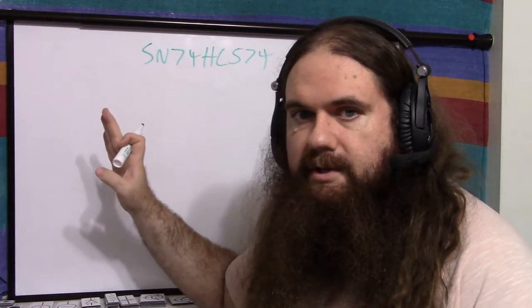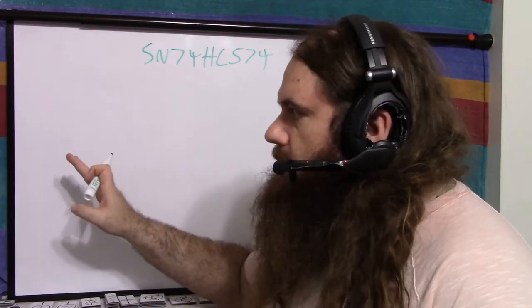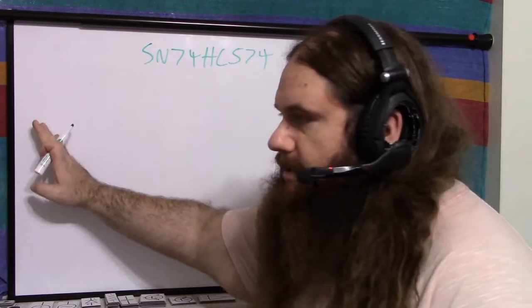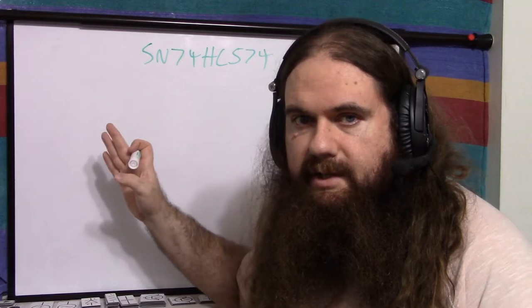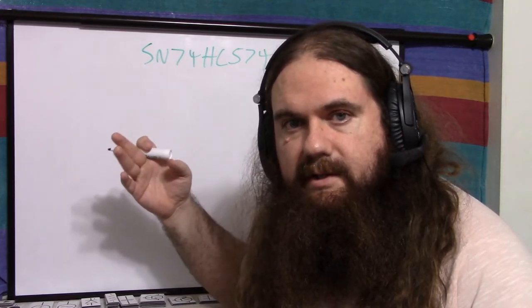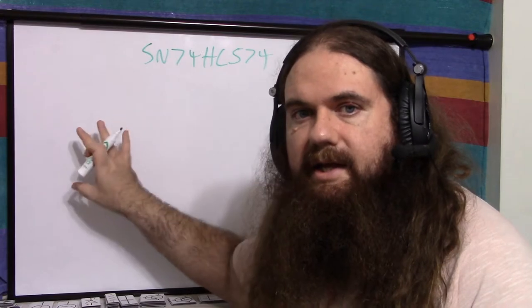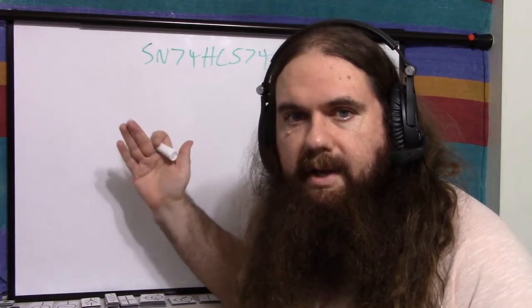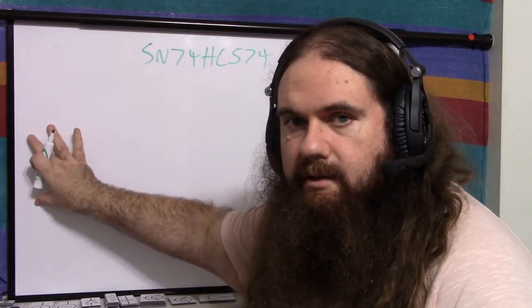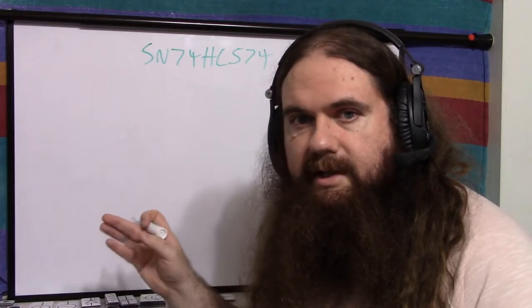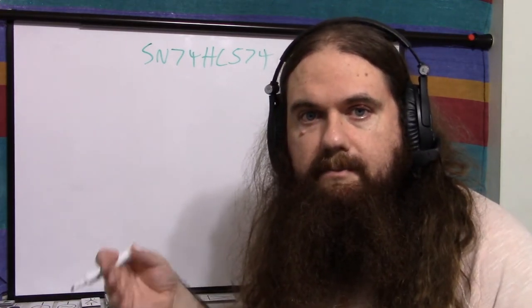And then the output of the register doesn't change until you do that. So whatever shenanigans are going on before the register, after the register is nice and stable. So you can use this, and I'll show you an example in the next video, to take any non-clocked chip and make it clocked. You just take that unclocked chip and throw this register on the end, and it adds a clock to the chip. Nice and easy.